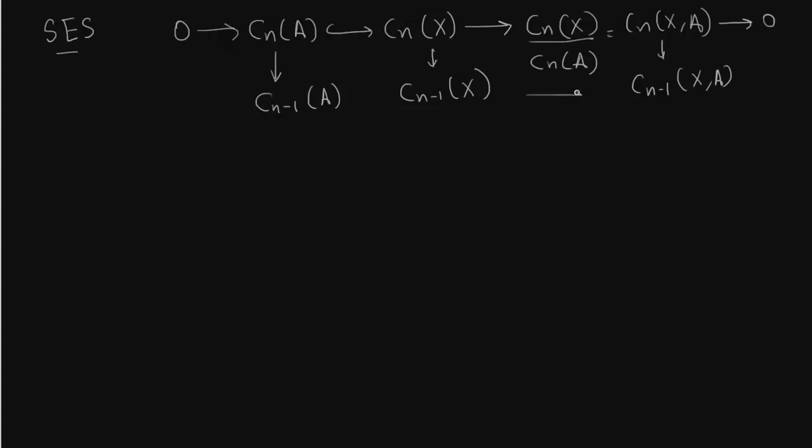Now what we get is a chain complex. This is a transpose of the figure of chain complexes A, B, and C which I just drew a few minutes ago. So let us write this as chain complex A, this is chain complex B, and this is chain complex C. So we get a long exact sequence of homology groups.